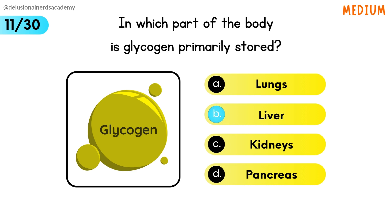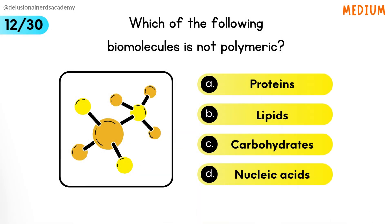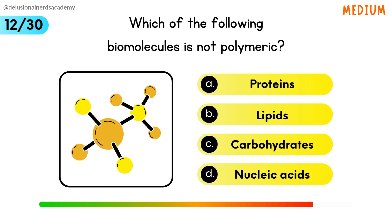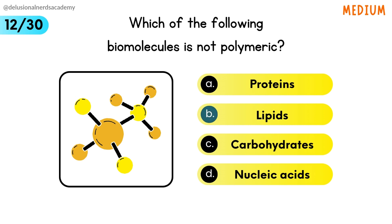Glycogen is stored in the liver. Which of the following biomolecules is not polymeric? Lipid is not a polymer.